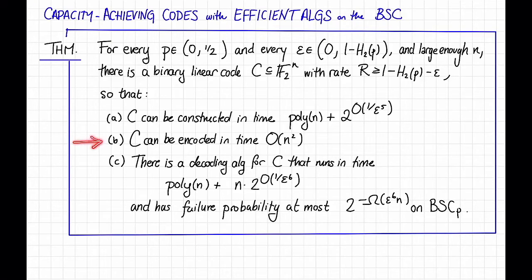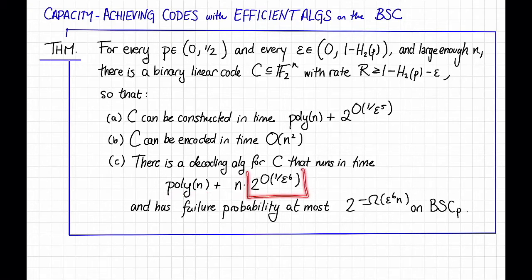Second, it has efficient encoding algorithms. It can be encoded in time big O of n squared. And third, it has efficient decoding algorithms. In particular, there is a decoding algorithm for this code that runs in time polynomial in n, plus some linear term in n, where the constant on the linear term has some unspeakable dependence on epsilon.